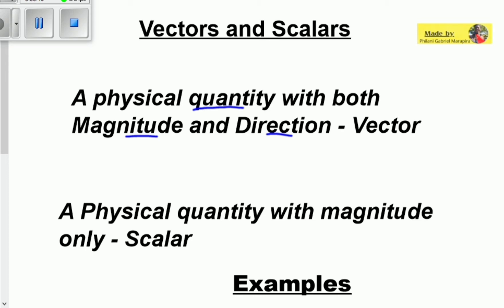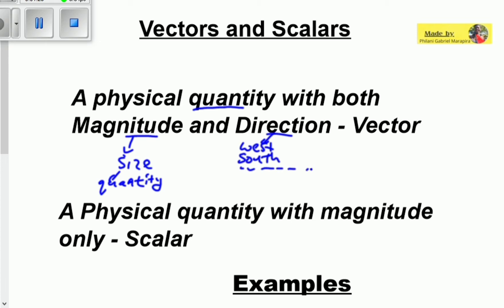A vector is a physical quantity with both magnitude and direction, meaning there's a size. The magnitude is otherwise known as the size or quantity. It has to do with how many of something we have — that's what we mean by the magnitude. The direction has to do with where you are headed: to the west, south, east, north, or left or right. So a vector is basically a physical measurement of something physical, with both magnitude — the size of that thing — and direction — where that thing is headed.